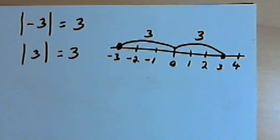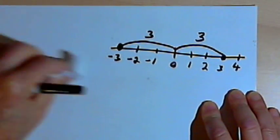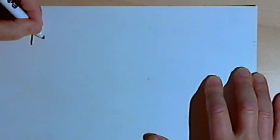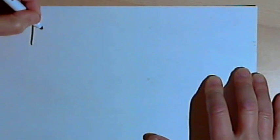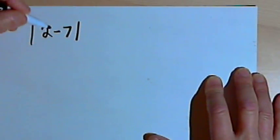Now, we don't have to have just single numbers in between the absolute value bars. I can have an expression. So let's say I have the expression, the absolute value of 2 minus 7.